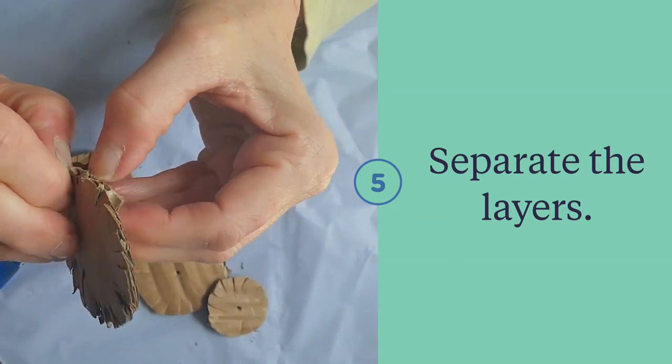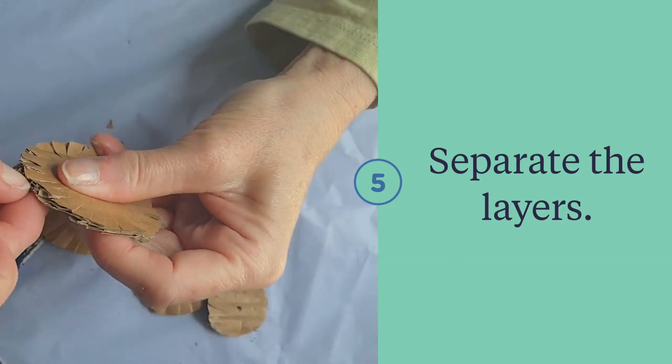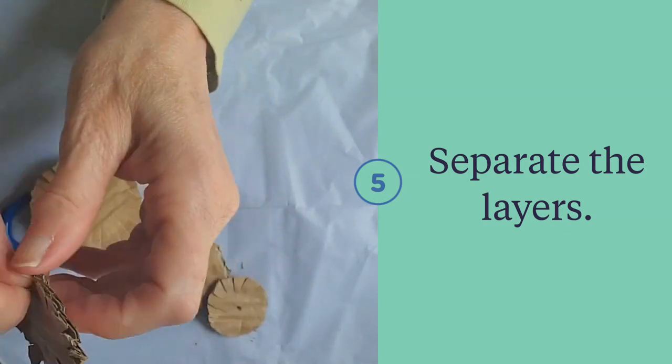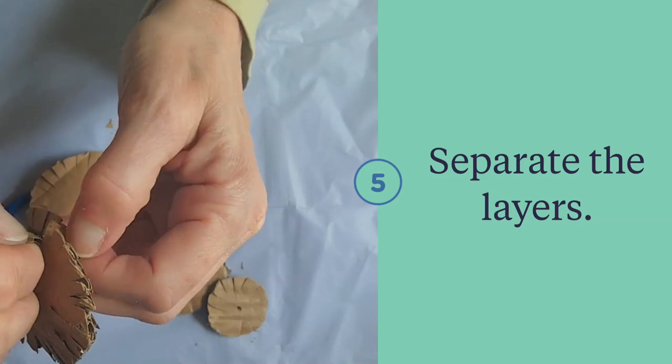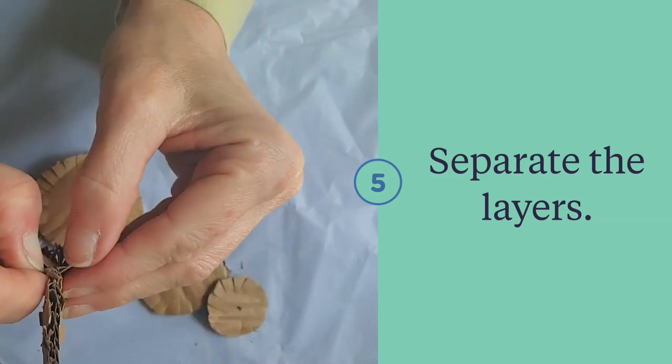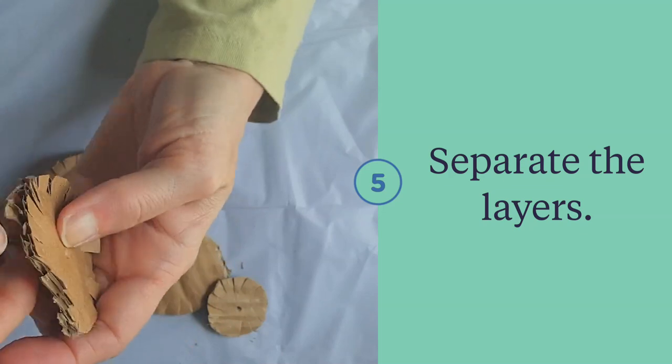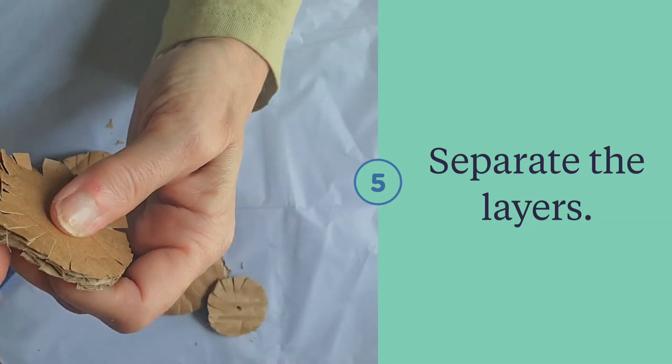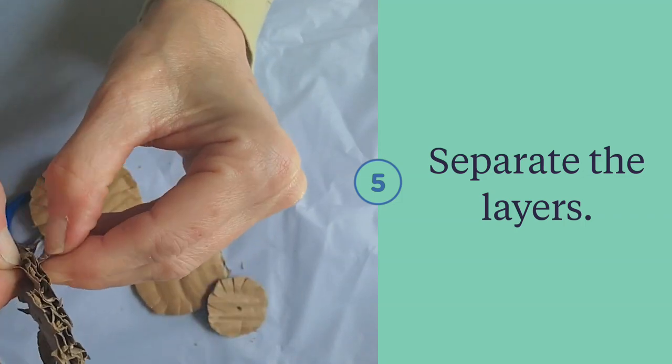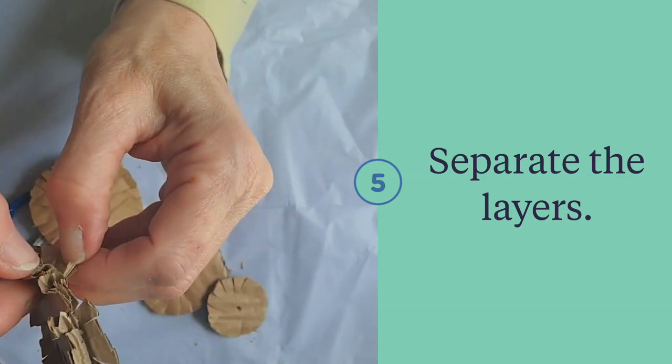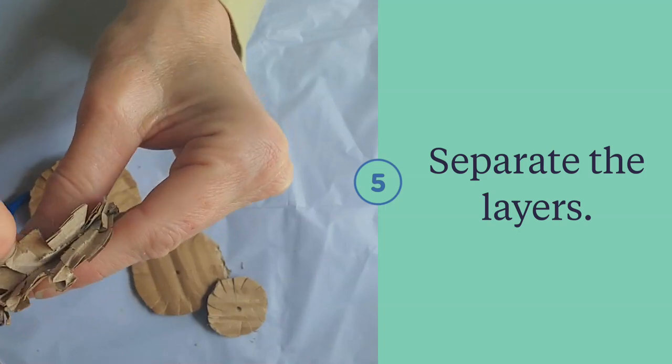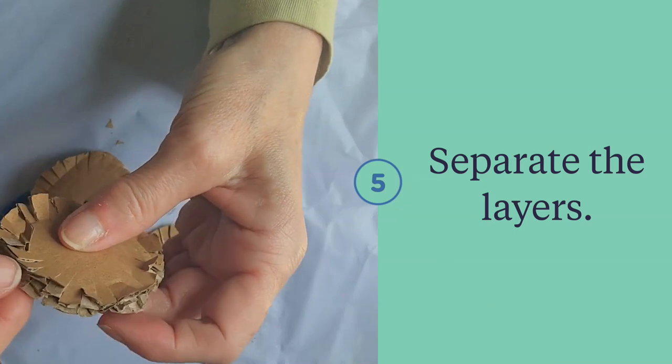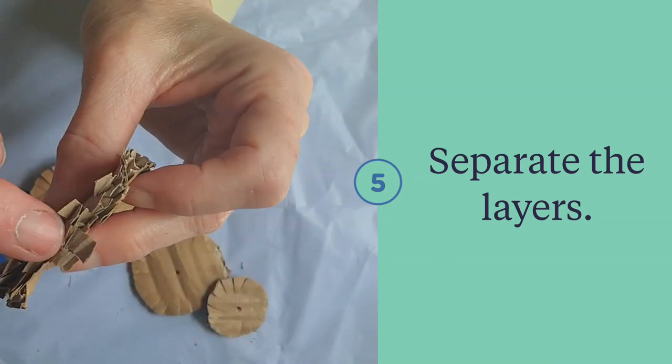Now you're going to gently separate the layers of all of the circles. This gives you many petals. Already it's looking more and more like a flower. I think they look a lot like mums when they're all finished, or marigolds.